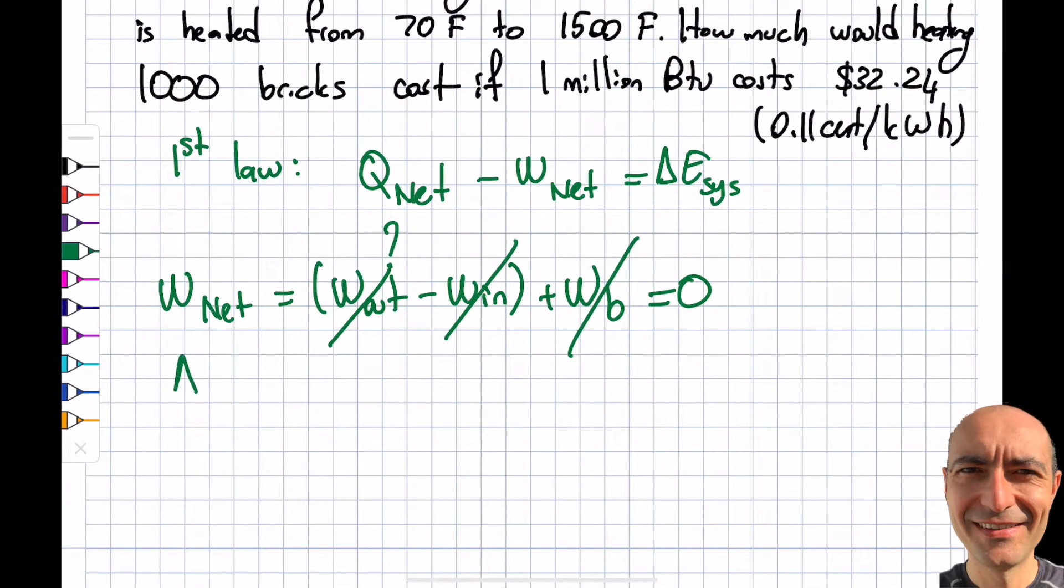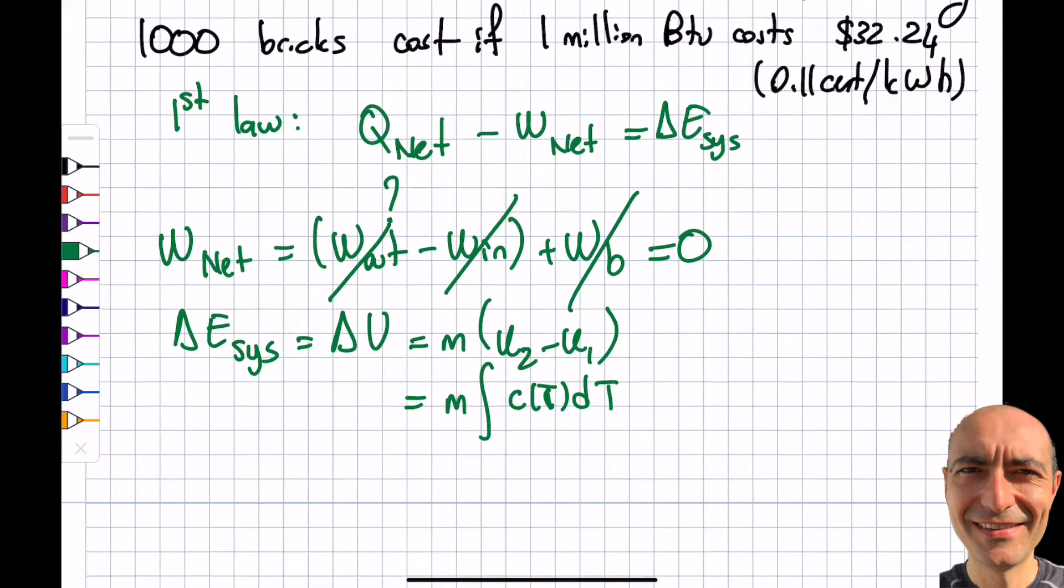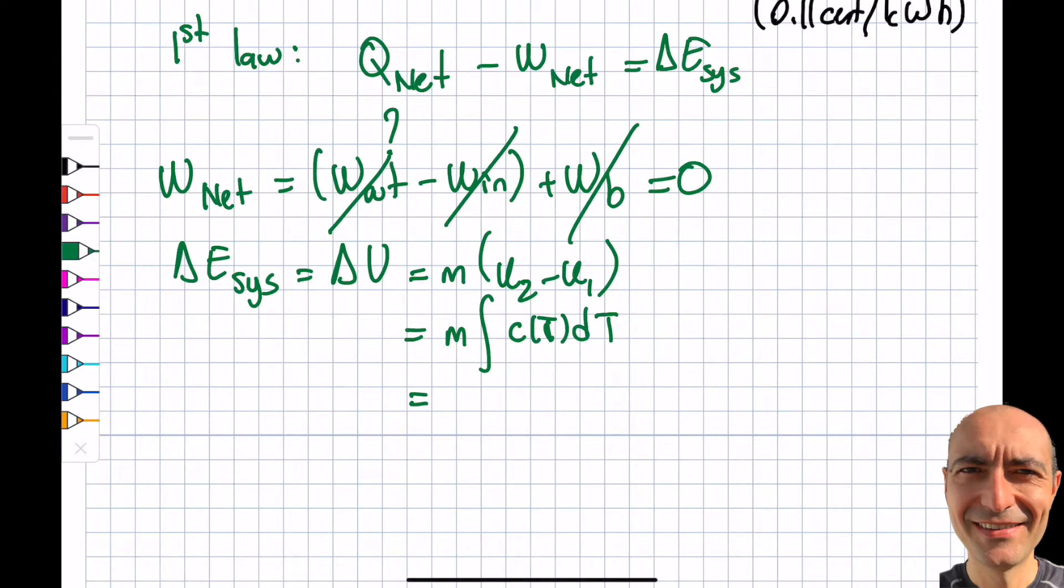And the next thing I left off with is the right-hand side. What is the delta E of the system? I don't have to explain a lot but this is obviously stationary. So then it becomes delta U. That will be N times U2 minus U1. And this we did before, N times integral of C as a function of T dt. So one thing that I want to highlight though for solids and brick is it is a solid. And remember C_v is equal to C_p is equal to C. So it's going to be N times C times integral dt will be delta T, so that will be T2 minus T1.